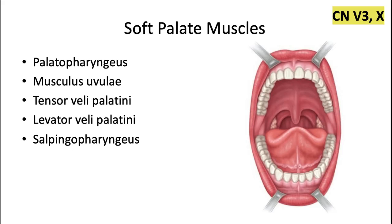The muscles of the soft palate are innervated by cranial nerve V3 and cranial nerve 10. The five muscles we'll talk about in this video are the palatopharyngeus, musculus uvulae, the tensor velli palatine, the levator velli palatine, and the salpingopharyngeus muscle.